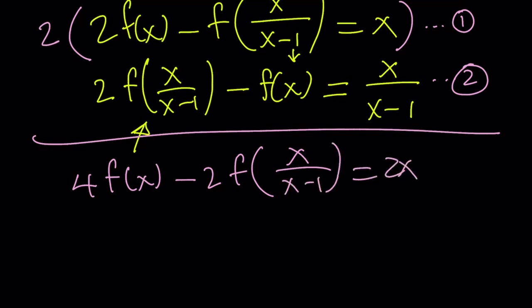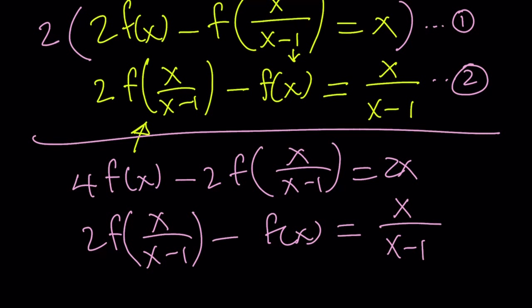The second equation is going to stay the same. 2 times f of x over x minus 1 minus f of x. Remember, this is the equation we obtained by replacing x with x over x minus 1.